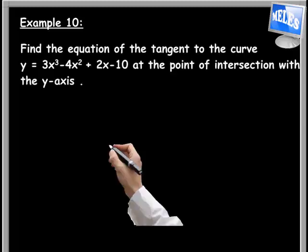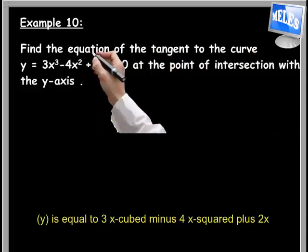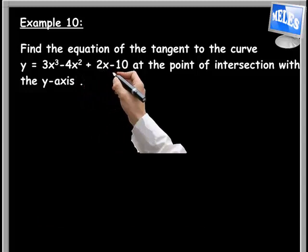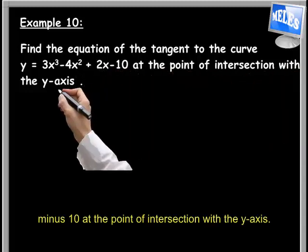Example 10: Find the equation of the tangent to the curve y equals 3x cubed minus 4x squared plus 2x minus 10 at the point of intersection with the y-axis.